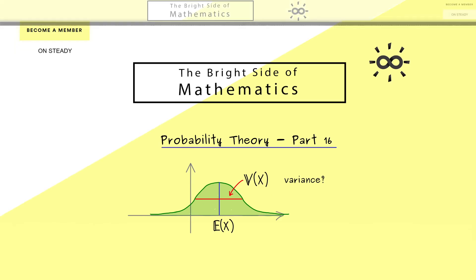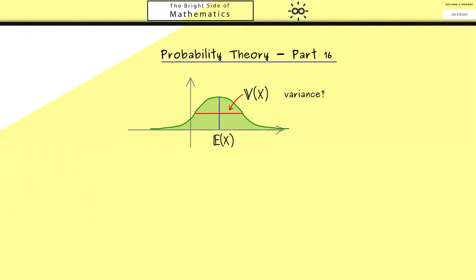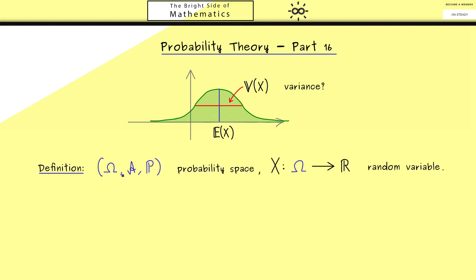Let's immediately start with the definition. The assumptions you already know: we need a probability space and a random variable x. Because x maps into the real numbers, the expectation E is by definition also a real number. The same holds for the variance because it is also an expectation. There are a lot of different notations for the variance, but most of the time you see V or Var. The question is: how can we measure the deviation from the expectation?